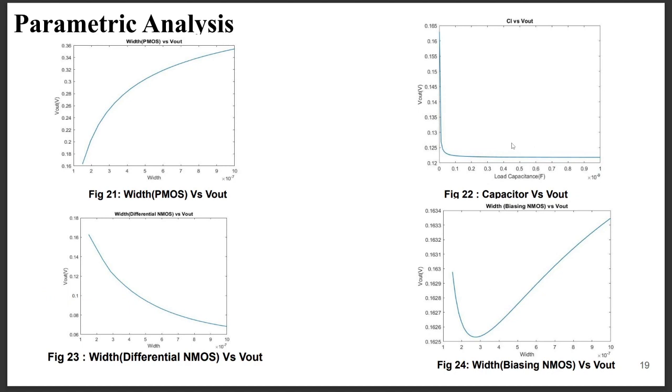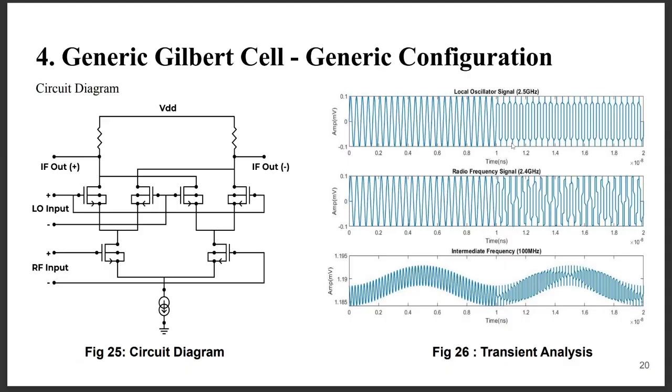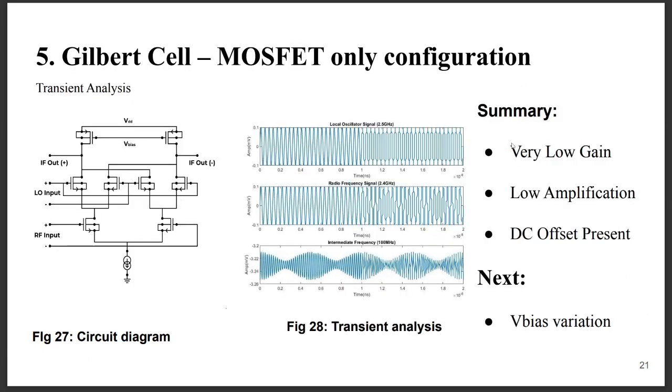Next we have a generic Gilbert cell configuration. There are many configurations for an IF mixer. Generic Gilbert cell is also one of them, but even generic Gilbert cells have many configurations. We have taken the one that has no capacitor and no inductor, rather it has a pair of resistors. This is the transient analysis as we can see at the right.